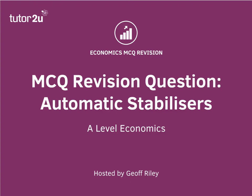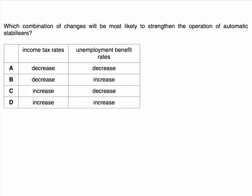Welcome to another in our series of MCQ revision questions. This one is on macroeconomics and it's on a quirky little topic, quite important. This is the concept of automatic stabilisers. Which combination of changes will be most likely to strengthen, to increase, the operation of automatic stabilisers?